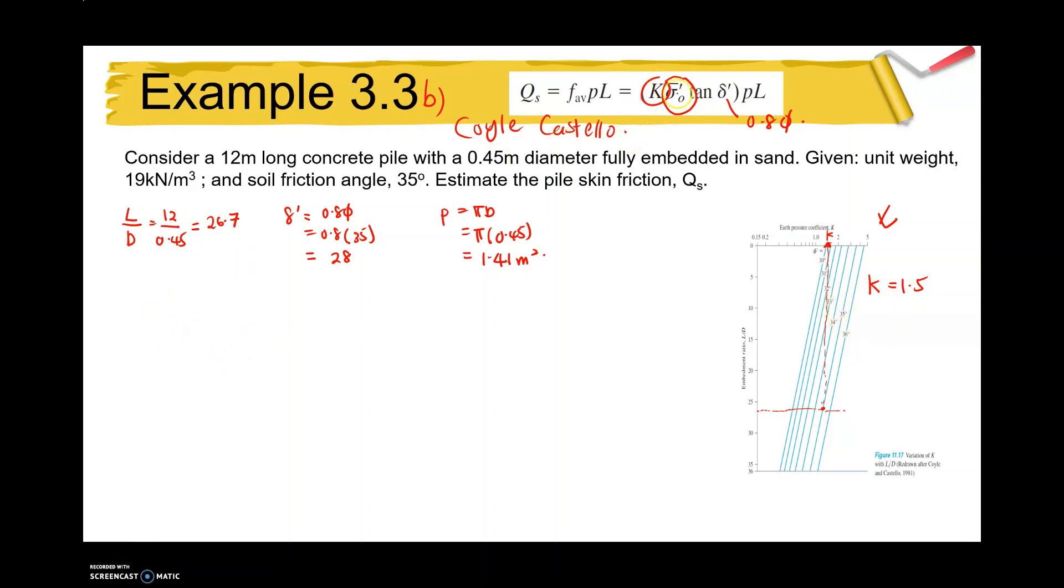Then how to determine the sigma? The sigma is very simple. The sigma is gamma H divided by 2, equals 19 times 12 divided by 2. We consider it in the center of the pile line. So our value is 114 kilonewtons per meter squared. Thus, our Qs equals K sigma prime...